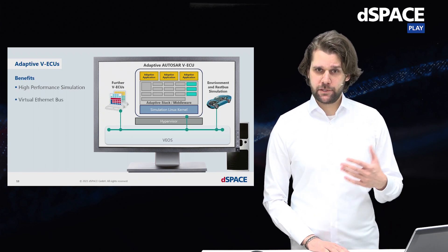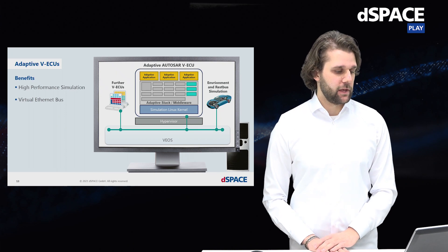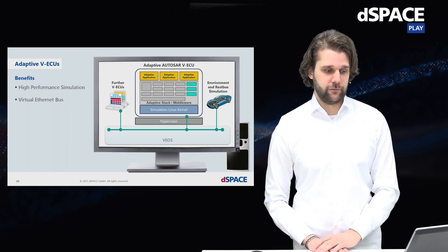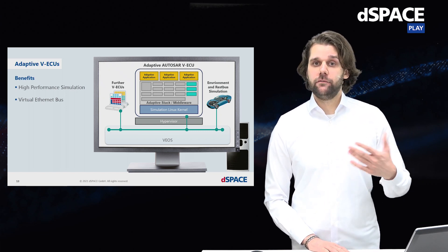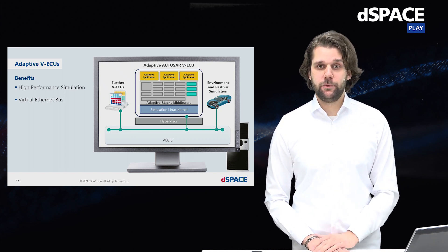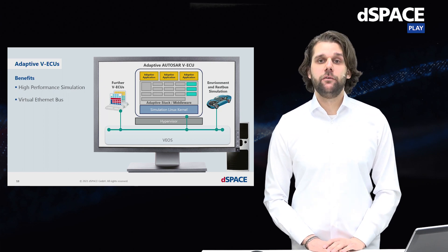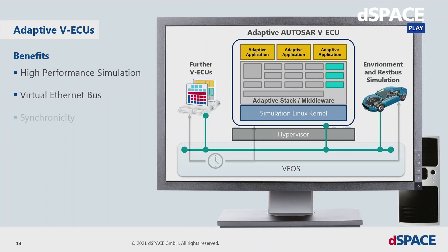To make the simulation system more complex and meaningful, we can add further virtual ECUs — adaptive, classic, or even non-AUTOSAR virtual ECUs. We can also add environment or sensor models and DRest bus simulation so that everything is connected. For this, VEOS simulates a virtual Ethernet bus. VEOS is also the timekeeper of the simulation, keeping all components synchronous for reproducible results, and it can also change simulation speed so you can run simulations faster than real time.